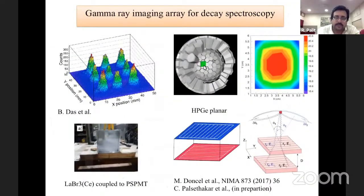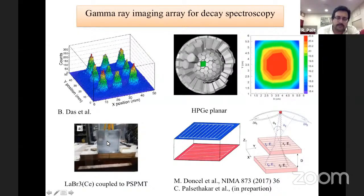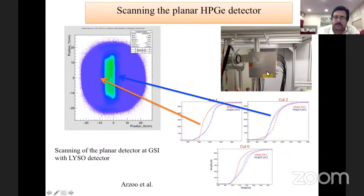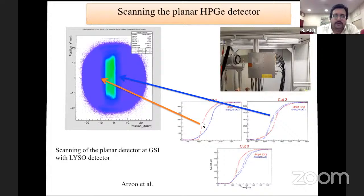In future we plan to develop detectors for even lower yield isotopes with gamma ray imaging capabilities. One development is a lanthanum bromide detector coupled with position-sensitive photomultiplier tubes — with a collimated source the position resolution is very nicely reproduced. We are also studying pulse shaping using germanium detectors, scanning the detector with a sodium source — the shape of the pulses depends on the interaction position, and from the rise time of pulses we can determine the interaction depth in the detector.